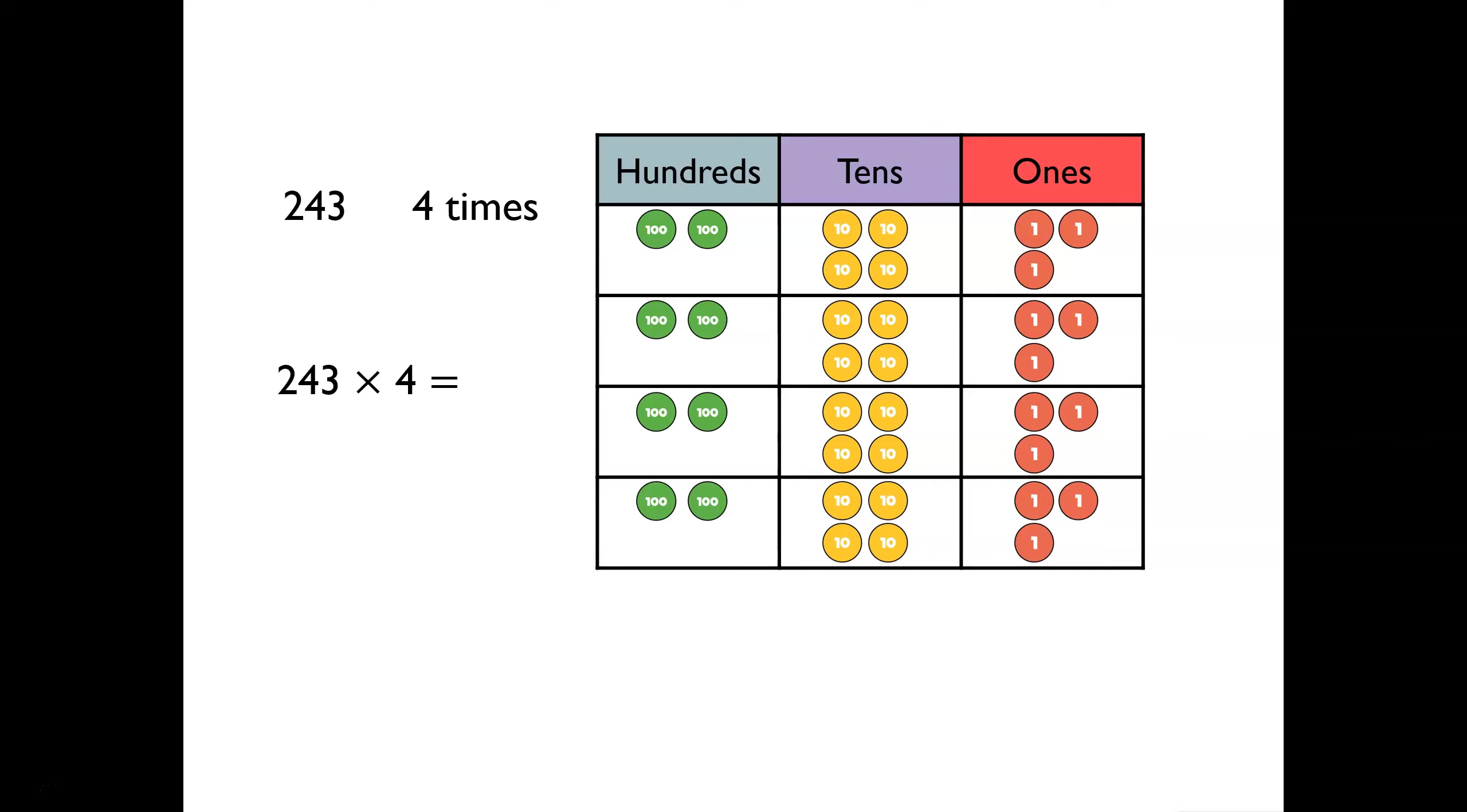When I multiply, I start with the smallest value first. So here it's the ones. You can see there are more than 10 ones. So we must exchange 10 ones for a ten, like this.